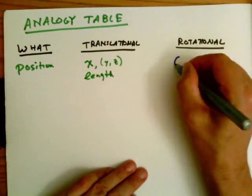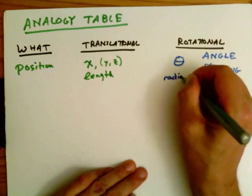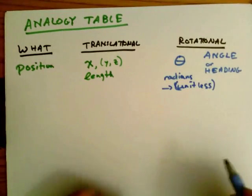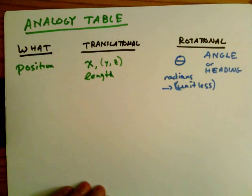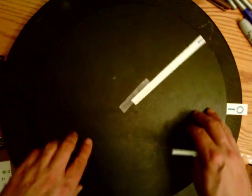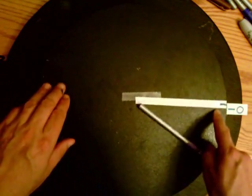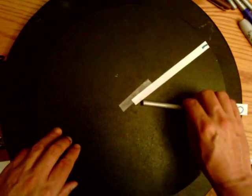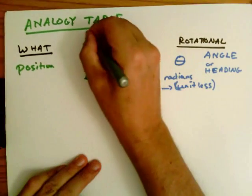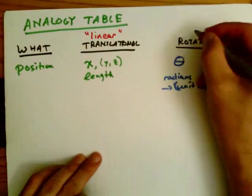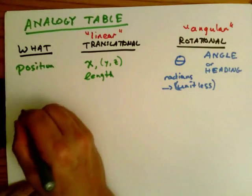For rotational motion, how far I'm moving along is described by some angle. I'll call that the rotational position, or heading, and it's measured in radians, which is a unitless quantity. For the turntable, I've marked a radius and can measure its position as an angle theta relative to the zero heading. The translational position is often called the linear coordinate, and the rotational equivalent is called angular.